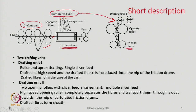There are two friction drums and the drafted fleece of fibres is introduced at the nip of these two friction drums. Whatever is fed by drafting unit 1 becomes the core part of the final yarn, and whatever is fed from drafting unit 2 becomes the sheath part. It has a core-sheath type of structure. Drafting unit 2 has two opening rollers which rotate at very high speed, and we feed multiple slivers — 5 to 6 slivers — whereas through drafting unit 1 we feed only one single sliver.